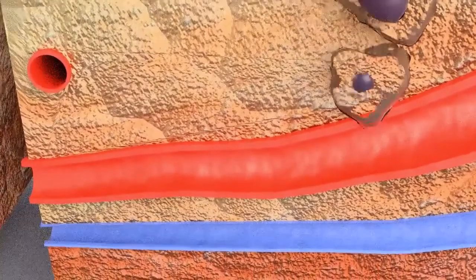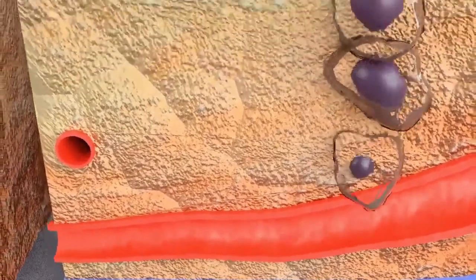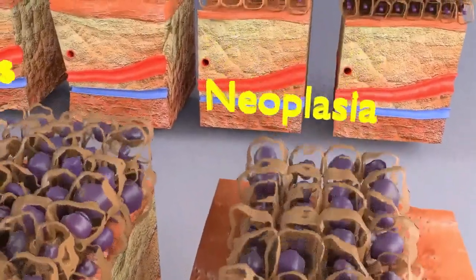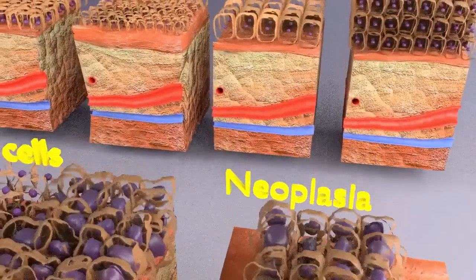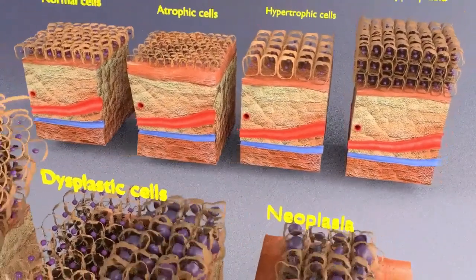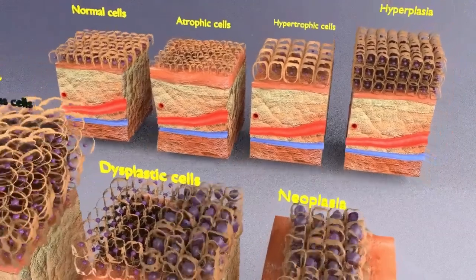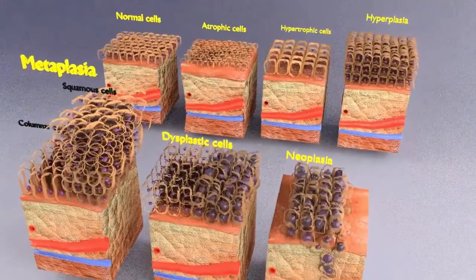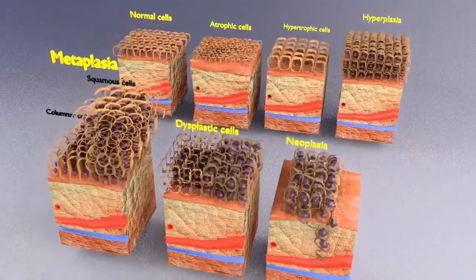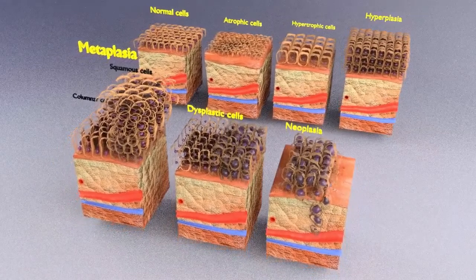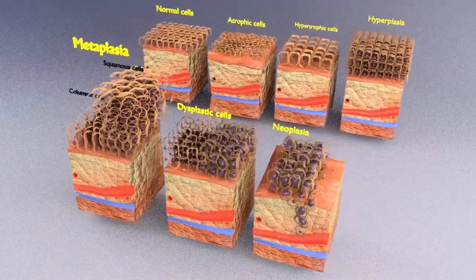The lesions — chiefly metaplasia, dysplasia, and neoplasia — form a spectrum with metaplasia at one end and malignant at the other end. The lesions near the metaplastic end of the spectrum have more chances of reversibility and less chance of progressing to dysplasia or malignancy, while those near the malignant end have less chances of reversibility and more chances of progressing to dangerous lesions.